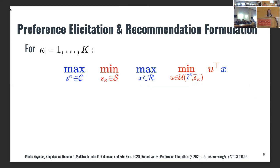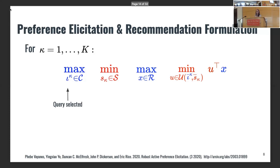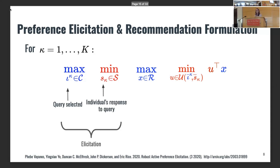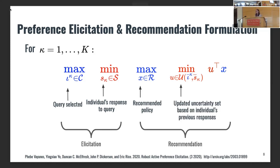I'll walk through at a high level what the robust optimization algorithm looks like. In blue are the decisions we get to make as the decision maker, and in red are the adversarial decisions that nature makes against us. The first thing we do is optimize which query to ask — we take policies A and B that we will learn the most about individual preferences from, and we do this with respect to the worst-case response an individual could give. No matter whether they say they prefer A, B, or are indifferent, we want to hedge against that uncertainty as in robust optimization. Then we recommend an optimal policy X that will maximize their worst-case utility.